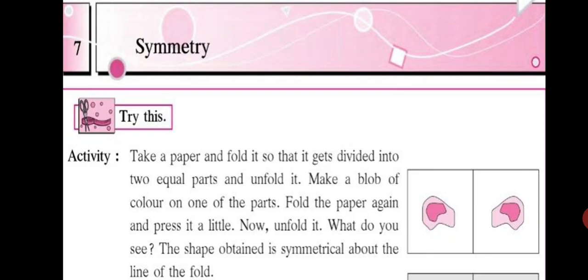Try this. Take a paper and fold it so that it gets divided into two equal parts. And then open the fold, unfold it. Now, make a blob of color on one of the parts, on one side of the fold. Just apply some color, watercolor or tube colors if you have. One or two or three, depends.